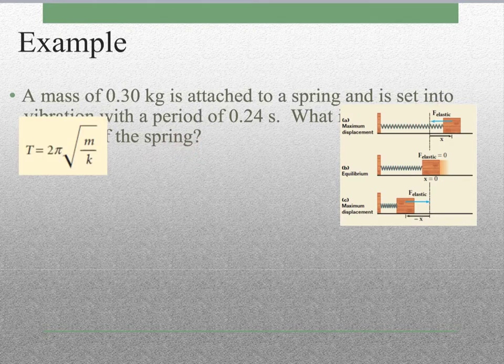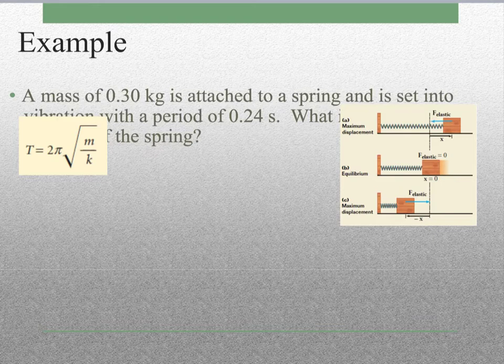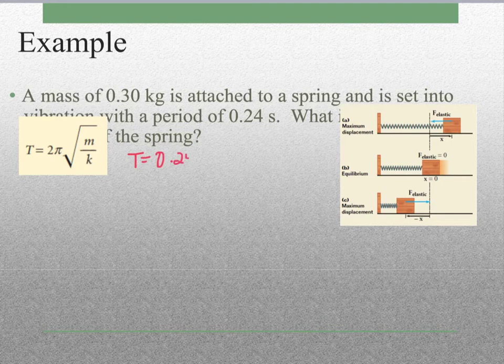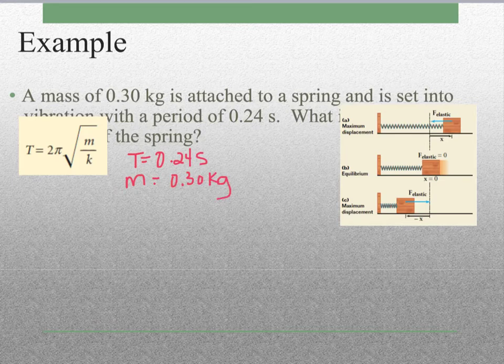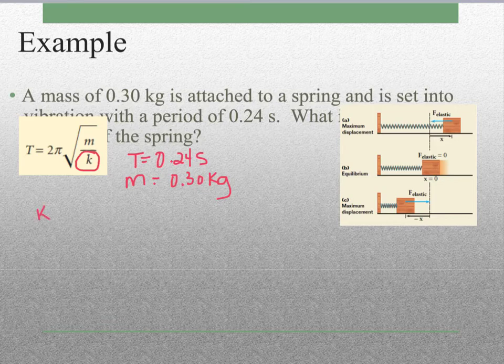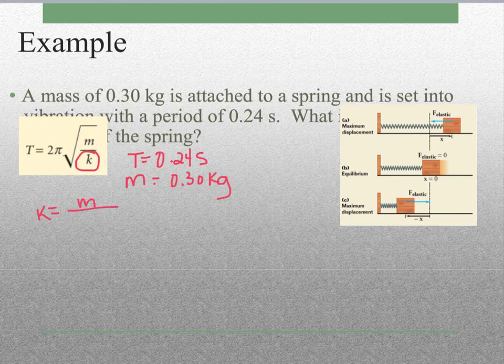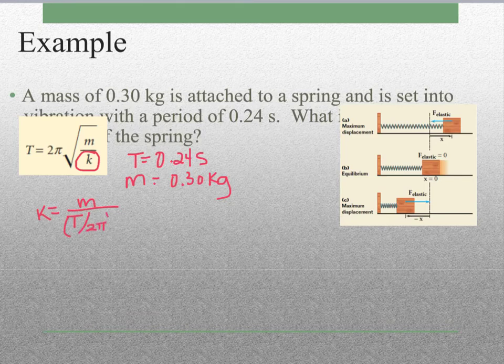Here's our equation. The period is 0.24 seconds, and we know that our mass is 0.30 kilograms. Like in the last one, we're going to find it easier to just solve for k to begin with. I've gone ahead and done that. You can ask me if you have any questions, but k will be equal to m divided by - we've got our parentheses here - the period divided by 2π, squared.